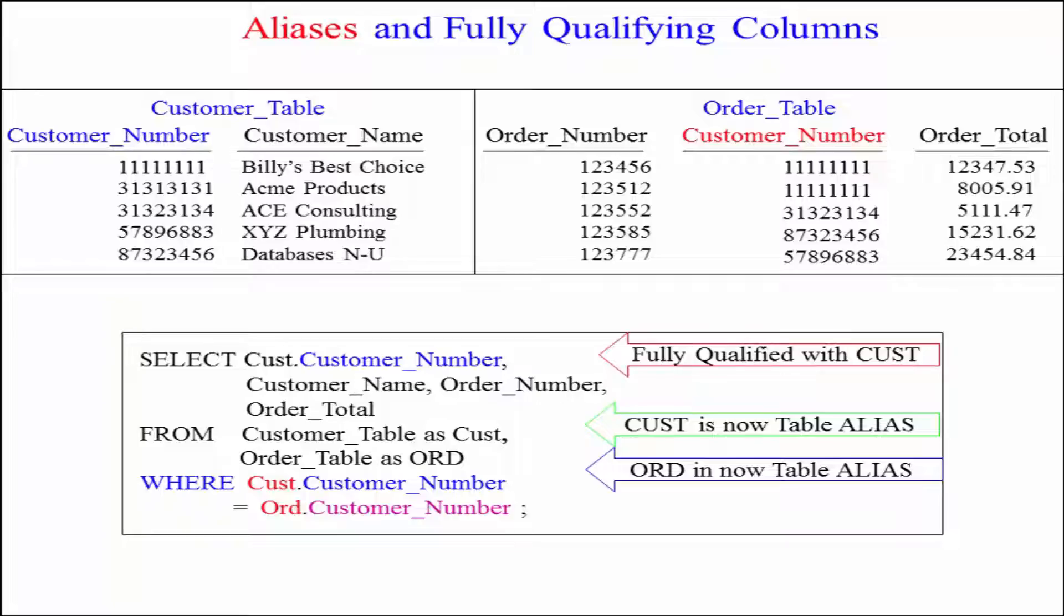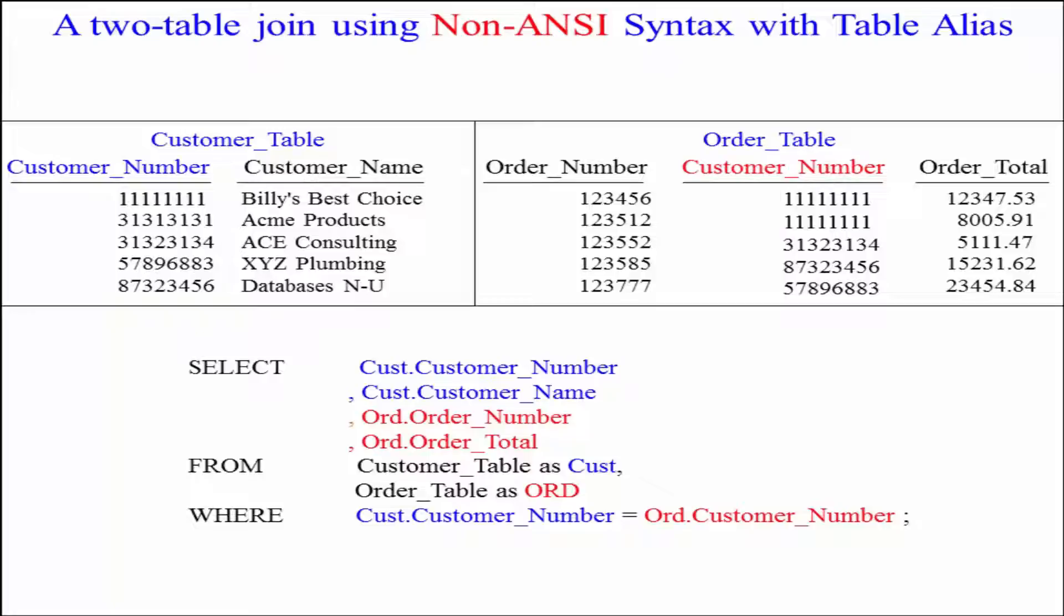Fully qualified with the table alias in front of it, cust dot customer number. This is because customer number is in both tables. Now you're not hurting yourself by fully qualifying everything. I could have said I want cust dot customer number, cust dot customer name, ord dot order number and ord dot order total. That would not have been a problem.